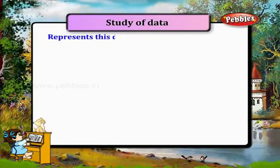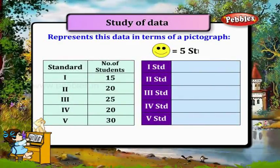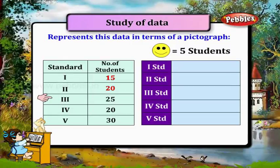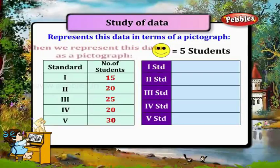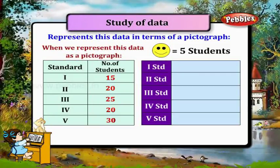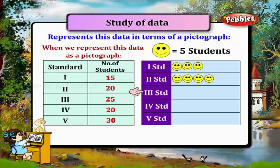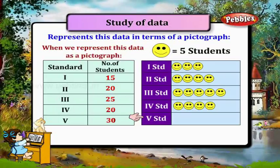Now represent this data in terms of a pictograph. Let this smiley be equal to 5 students. Standard 1: 15 students, Standard 2: 20, Standard 3: 25, Standard 4: 20, Standard 5: 30. When we represent this data as a pictograph, we get: 1st standard 3 smileys, 2nd standard 4, 3rd standard 5, 4th standard 4, and 5th standard 6.